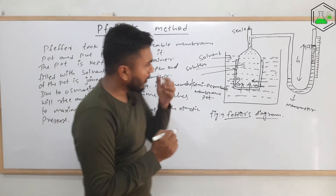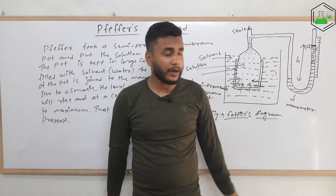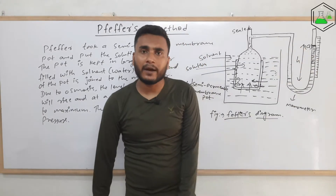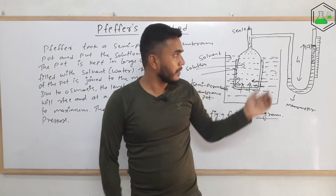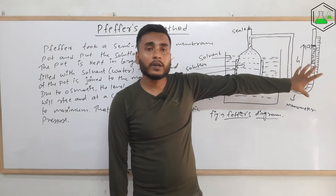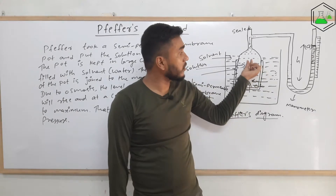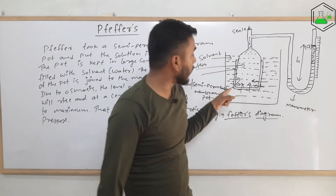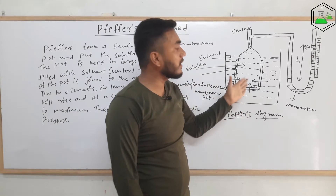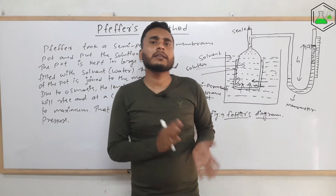Osmotic pressure can also be calculated using a manometer, similar to how vapor pressure is calculated. We need the height measurement, and from that we can calculate the required value of pressure. When the liquid reaches the maximum height h, that is equal to the osmotic pressure. At that point the water molecules stop entering, osmosis ceases, and the pressure generated equals the osmotic pressure. That covers Pfeffer's method — now let's understand the second method.